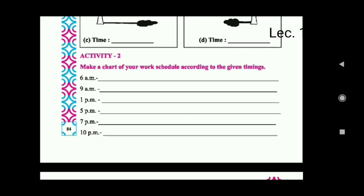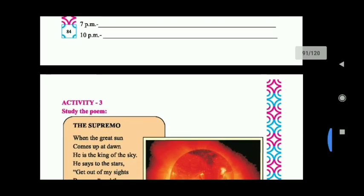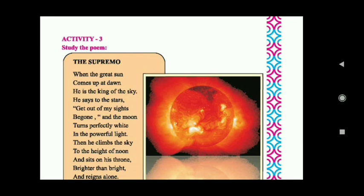Activity number 2 is: Make a chart of your work schedule according to the given time. Either you have times given - 6, 9, 1 pm, 5 pm, 7 pm, 10 pm. What are the activities that you normally do in this specific given time? This is activity number 3. Study the poem, The Supremo.